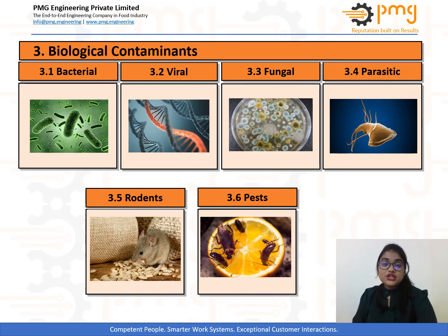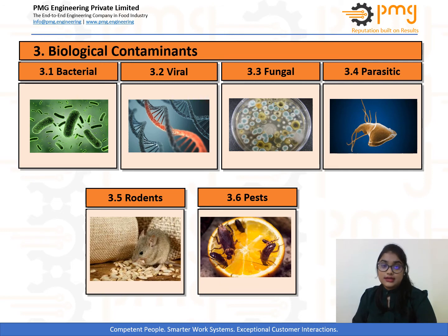Bacterial contamination is thought to be the most common cause of food poisoning across the world, and the best way to protect against its occurrence is by observing best food safety practices inside a food facility. Some of the most common pathogens responsible for causing foodborne illness are Campylobacter, E. coli, Salmonella, Listeria, Norovirus, and Toxoplasma.